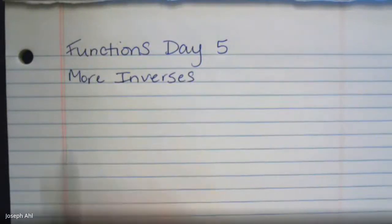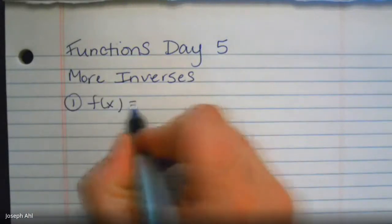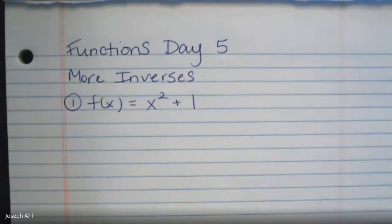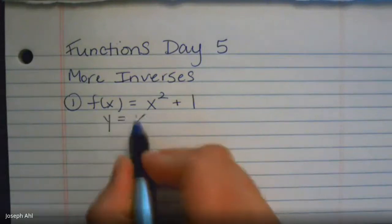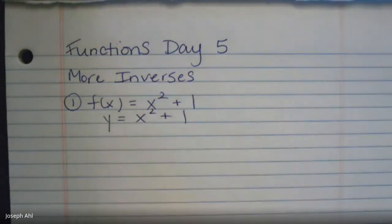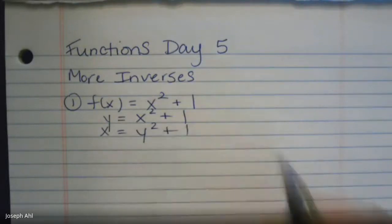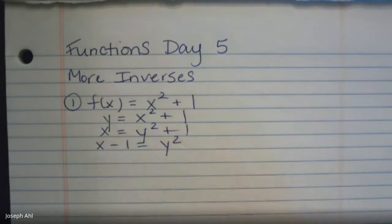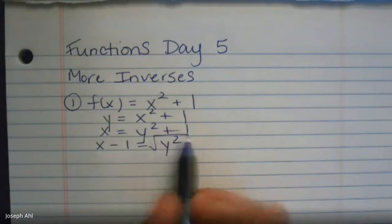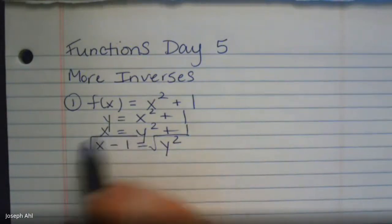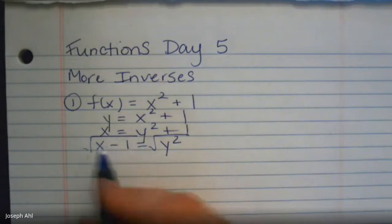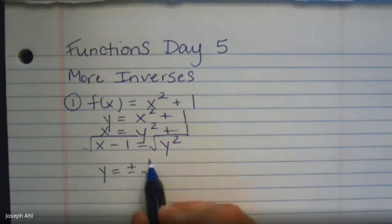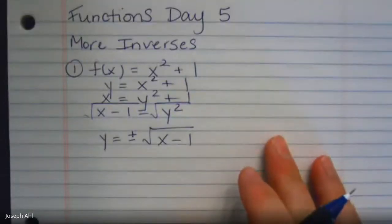We're going to talk more about this concept today by analyzing the inverse of f(x) = x² + 1. To find the inverse, we start by saying y = x² + 1, then switch x and y and solve for y again. So we get x = y² + 1. We subtract one to the other side, and then take the square root of both sides — but don't forget that gives us plus or minus √(x - 1).